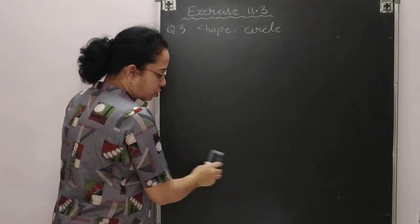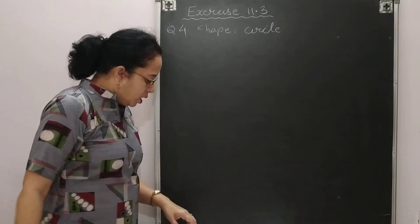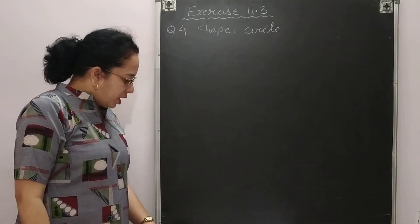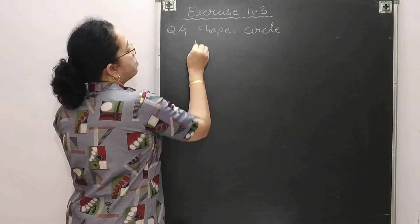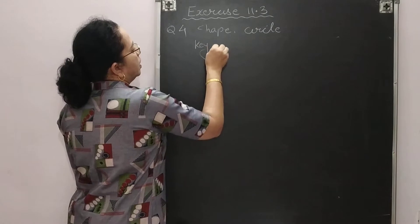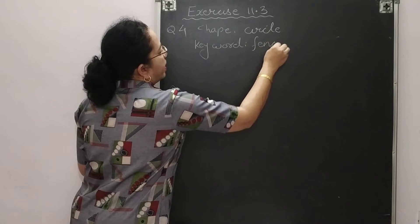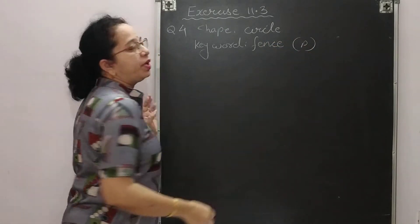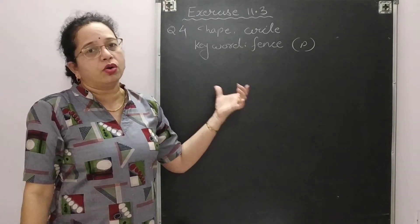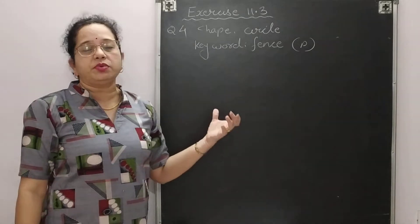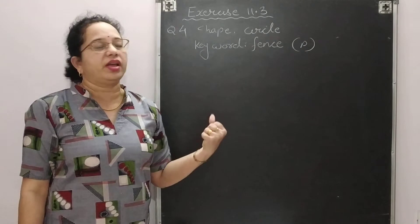Now question number 4: A gardener wants to fence a circular garden. The shape is a circle, and the keyword here is 'fence.' Fence means perimeter. I have a separate video explaining how to identify whether to find perimeter or area from keywords — you can watch that if in doubt.